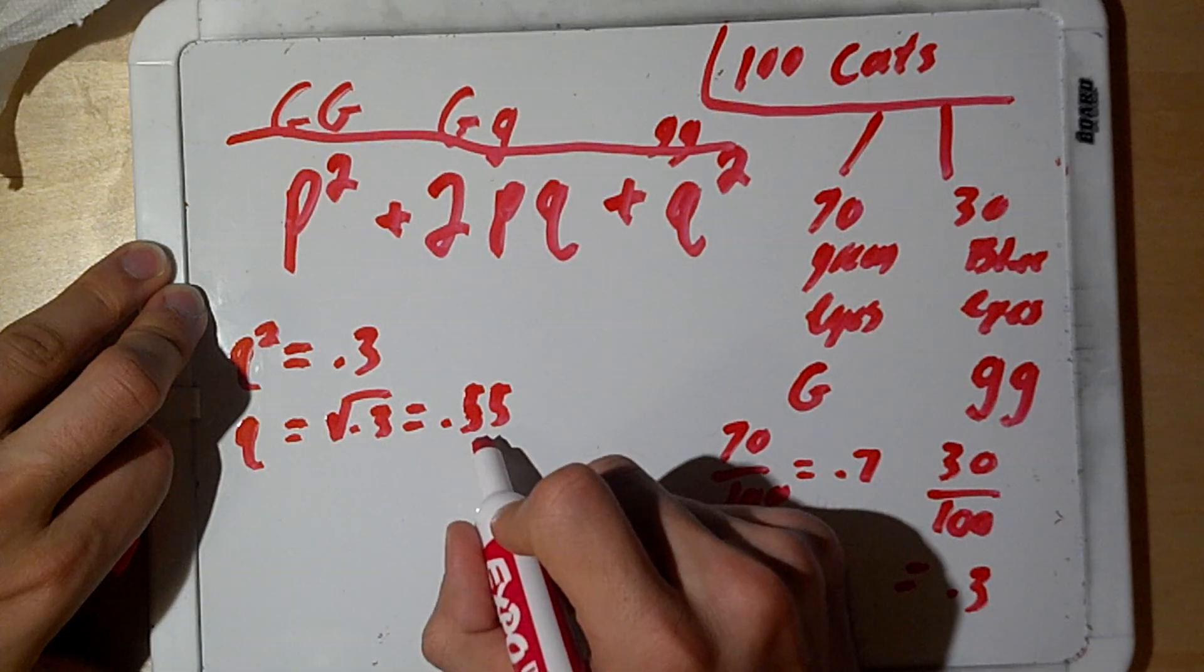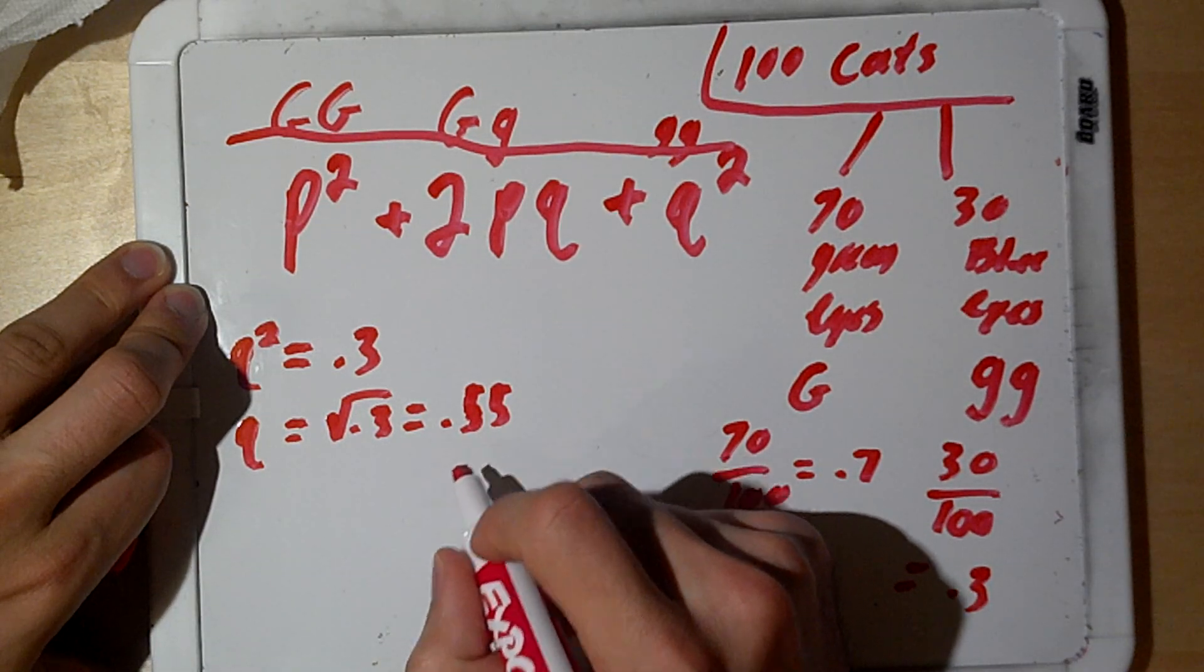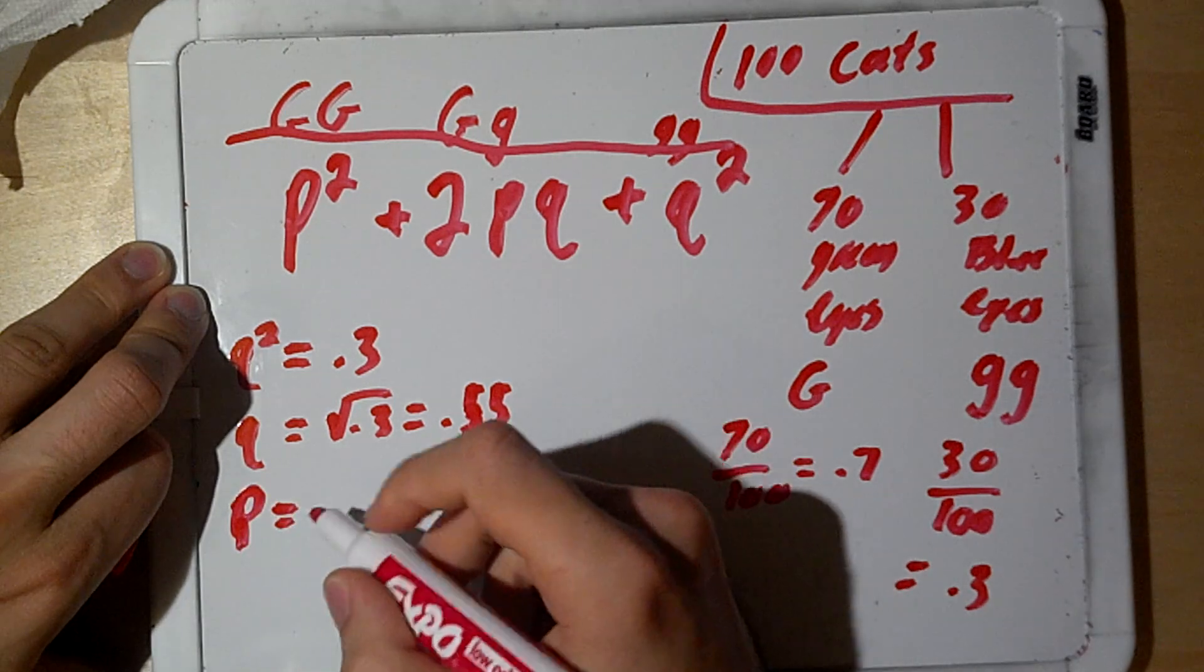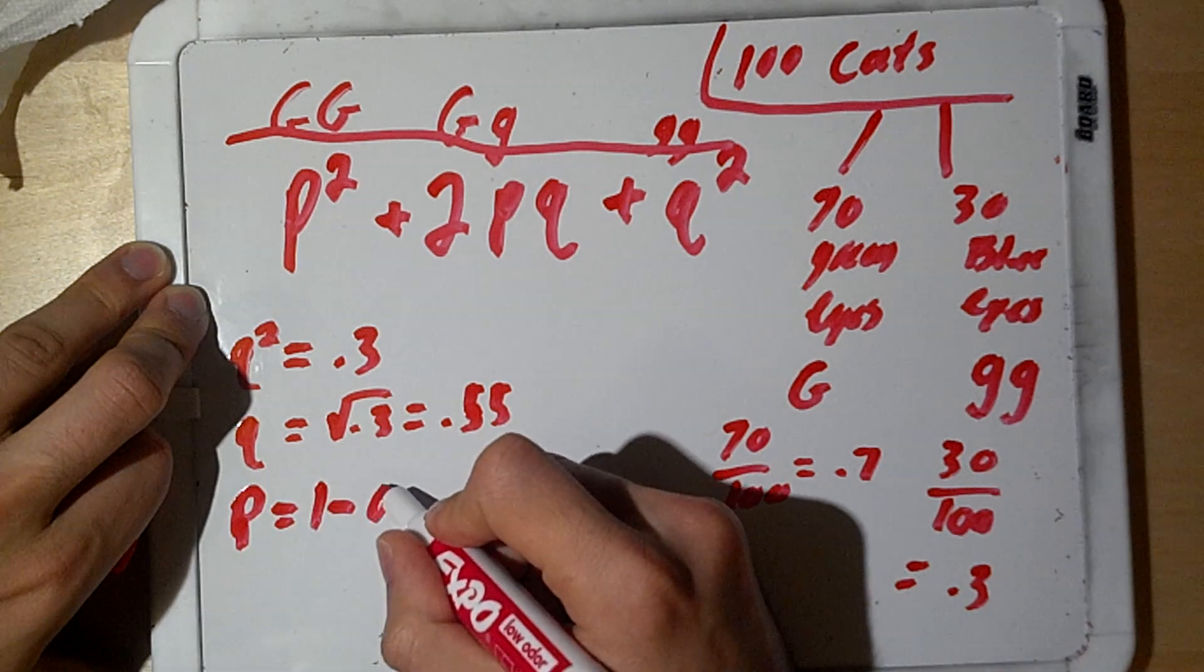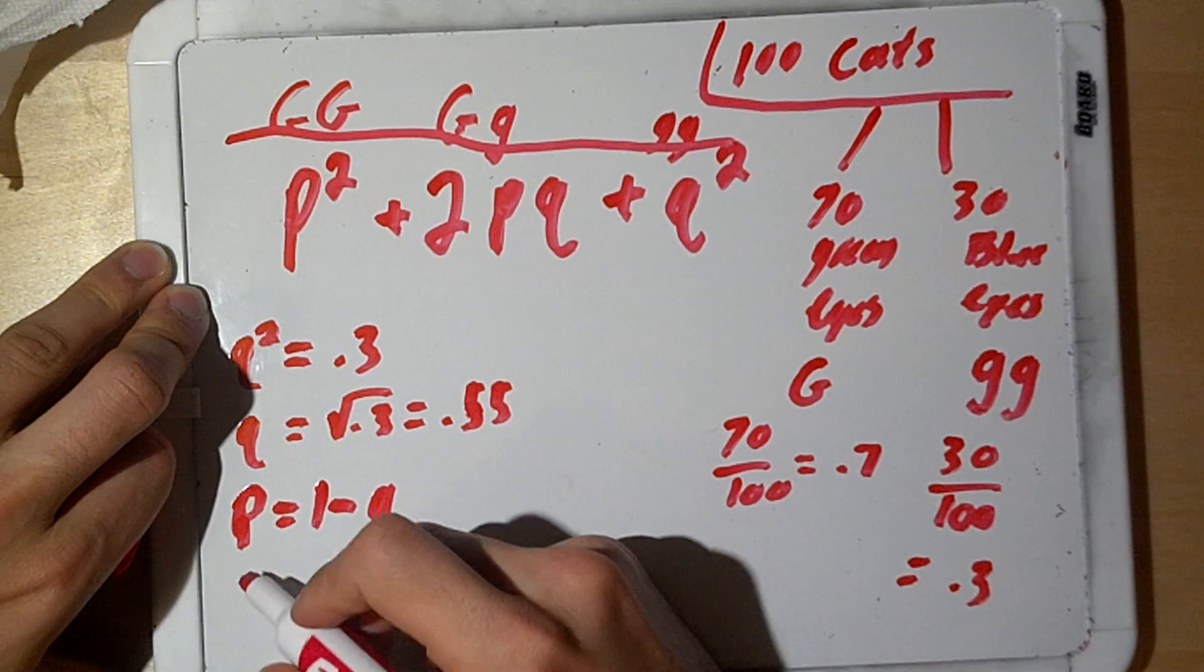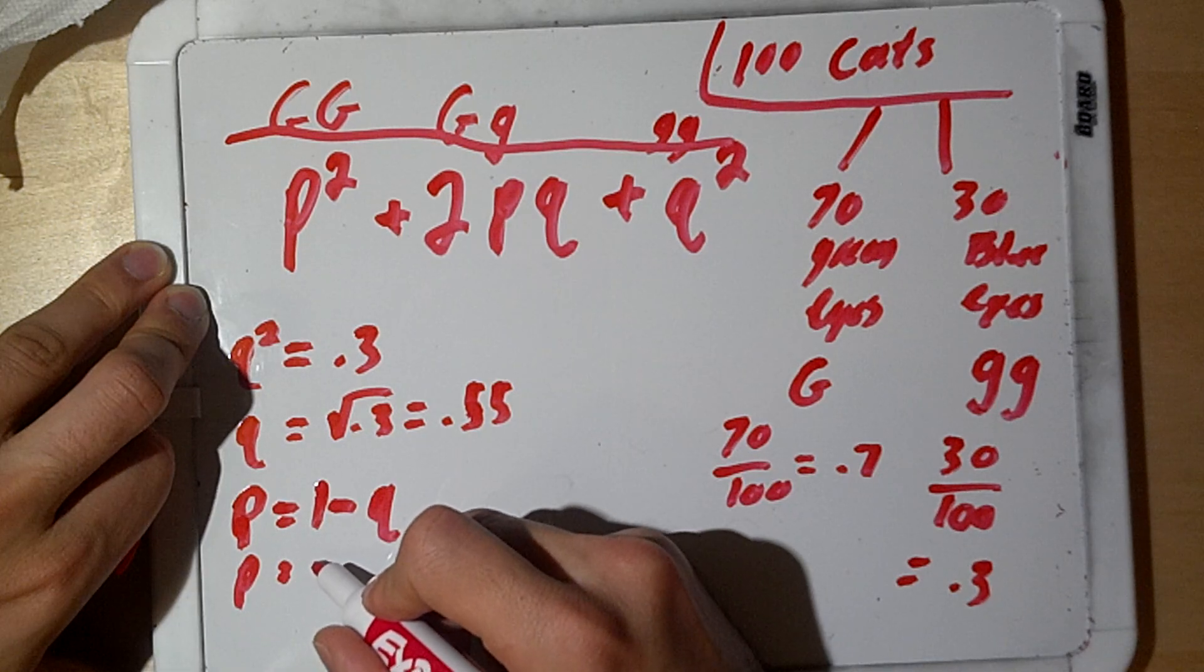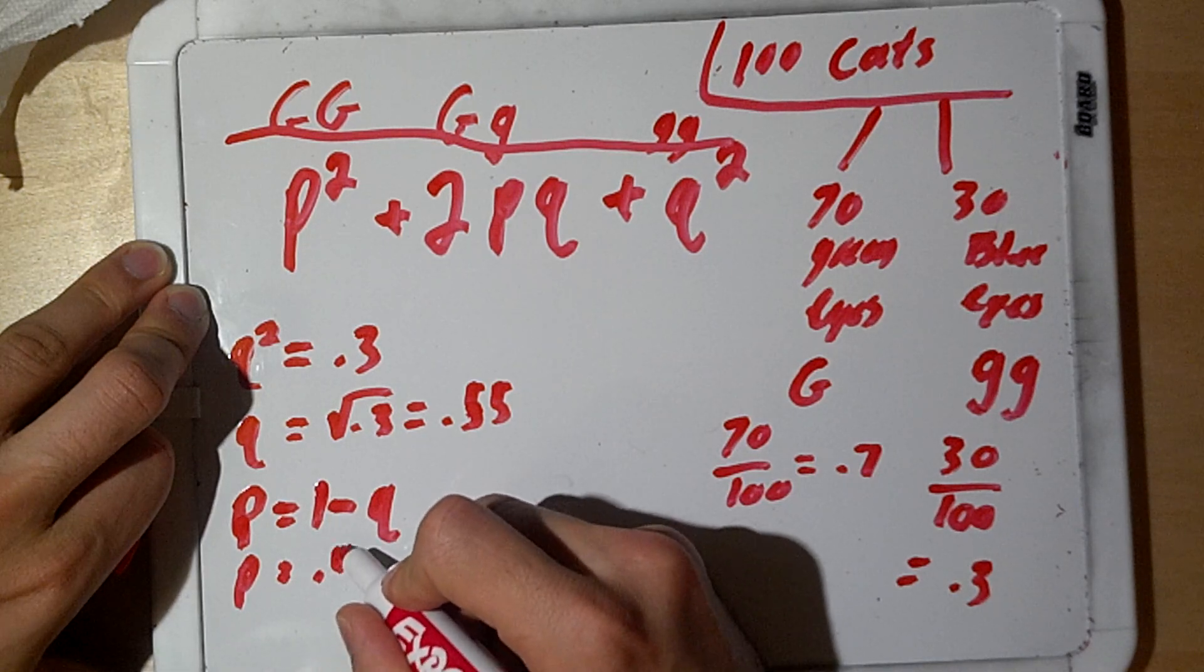And from here, we can easily find the value for p. Now, p is defined as 1 minus q. So, p equals 1 minus q, 1 minus 0.55 should result in 0.45.